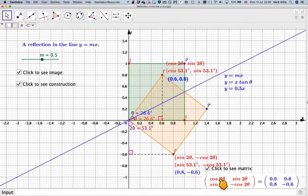So we write it as a vector, cos 2 theta, sin 2 theta. And 0, 1 has gone to being sin 2 theta minus cos 2 theta. So again, we write it as a vector, sin 2 theta minus cos 2 theta.